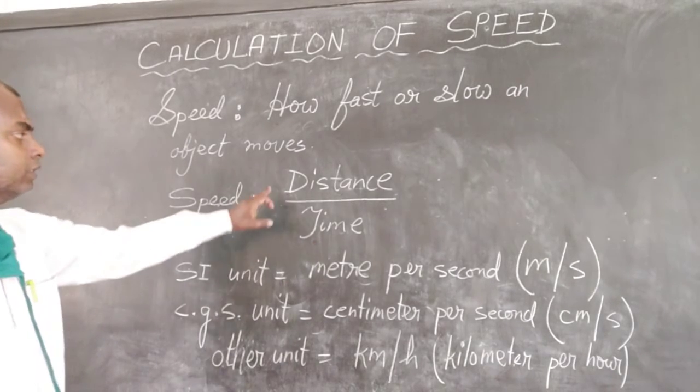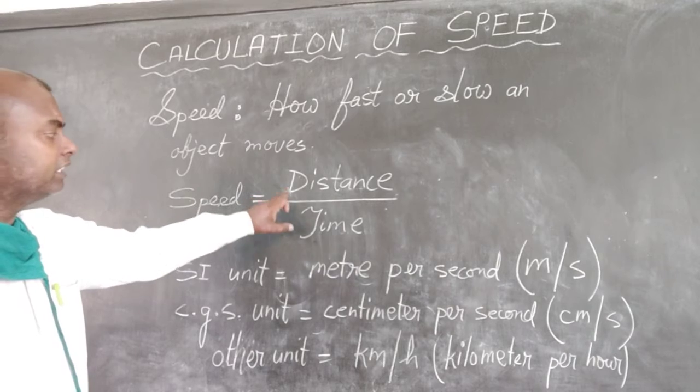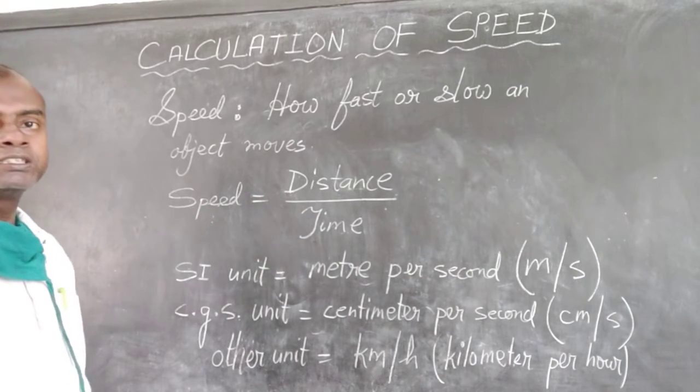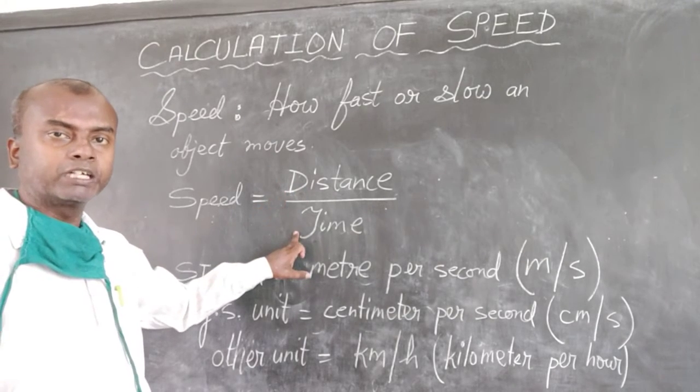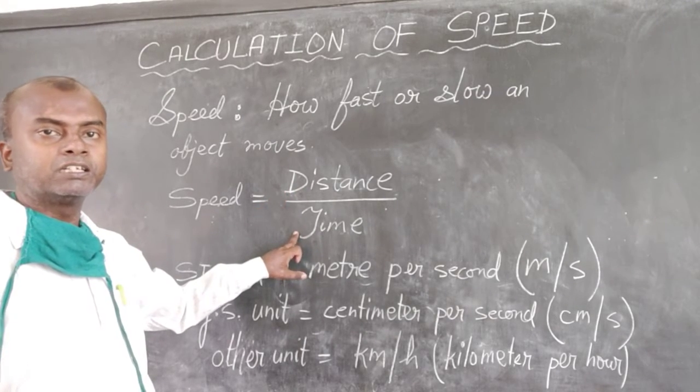So if more distance is covered in less time, we say speed is more. If less distance is covered in that same particular time, then the speed is less.